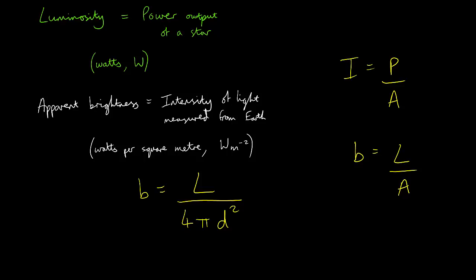So 4 pi d squared gives us the surface area of a sphere where the radius is the distance between the star and the observer. For example,